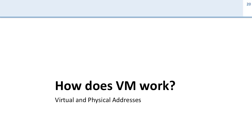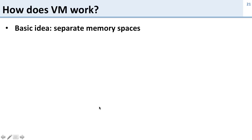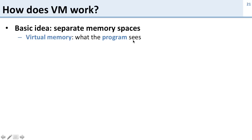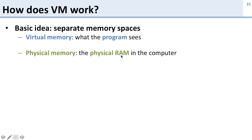Now let's talk about how virtual memory works. We're going to introduce two concepts: virtual and physical addresses, and some acronyms for them. The basic idea is we have these separate memory spaces. Virtual memory is what a program sees, and physical memory is the physical RAM in the computer. When you install memory in your computer, this is what you're paying for. What the program sees — the virtual memory — is what the ISA promises.